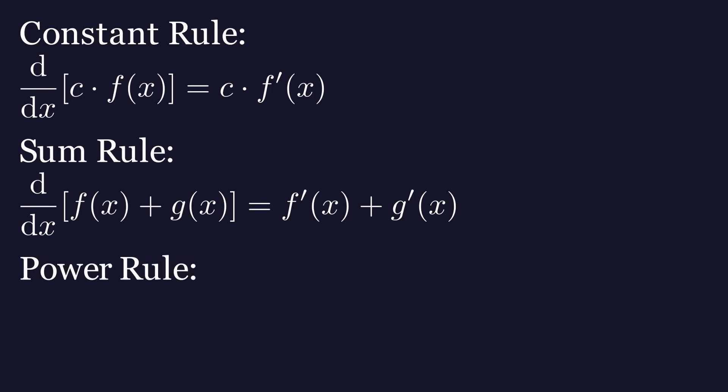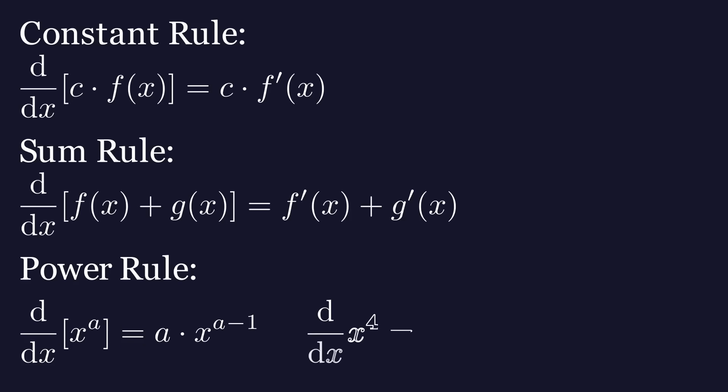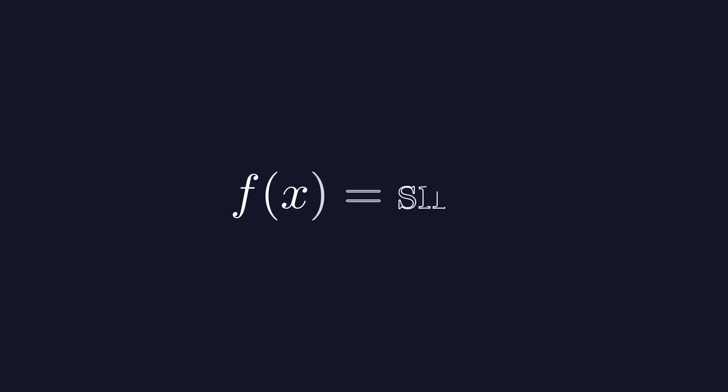The power rule tells us that if we have a function of the form x to the power of a, the derivative of this function is equal to a times x to the power of a minus 1. For example, the derivative of x to the power of 4 is equal to 4 times x cubed.